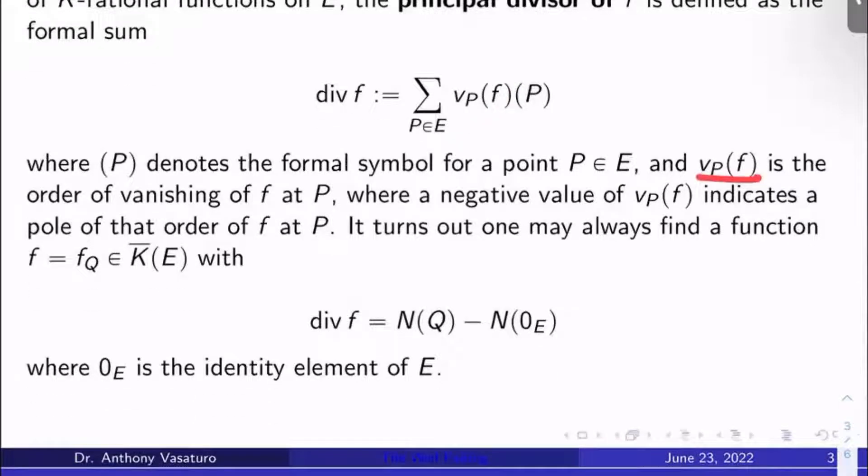Now this parentheses (P) symbol, it's a completely formal symbol. It's just meant to be a placeholder, formally speaking, for the point P in E. So for every single point P in E, there will be one of these formal symbols in the sum. And then what are these v_P(f)? That's simple.